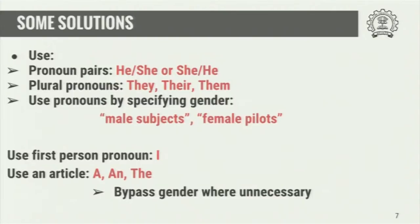These are some solutions we can use. We can use pronoun pairs — 'he or she,' 'she or he' — and we can also use plural pronouns like 'they.' For example, instead of saying 'every participant has to submit his evaluation form,' which is wrong because there are both men and women, I can say 'every participant has to submit his or her evaluation form,' or better yet, 'all participants have to submit their evaluation form.' Avoiding mention of gender altogether is an example of gender neutrality.